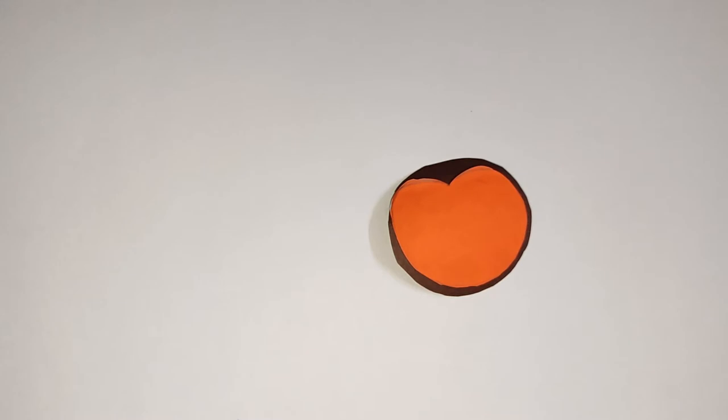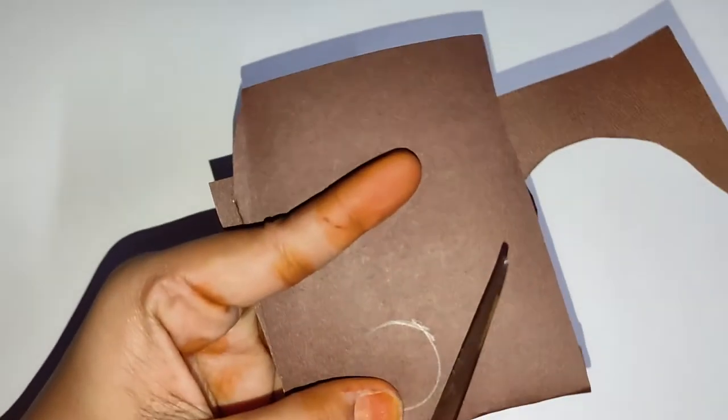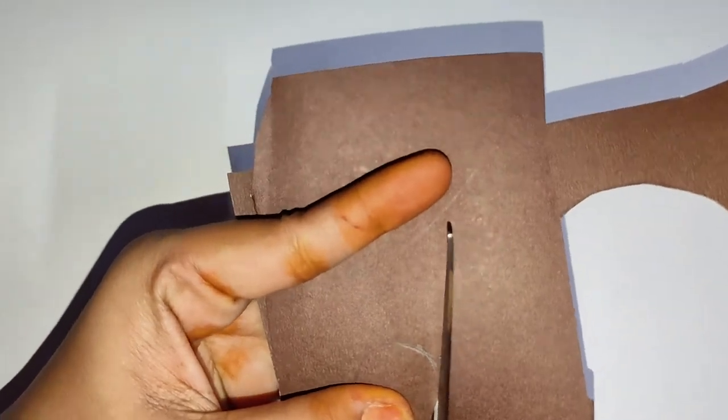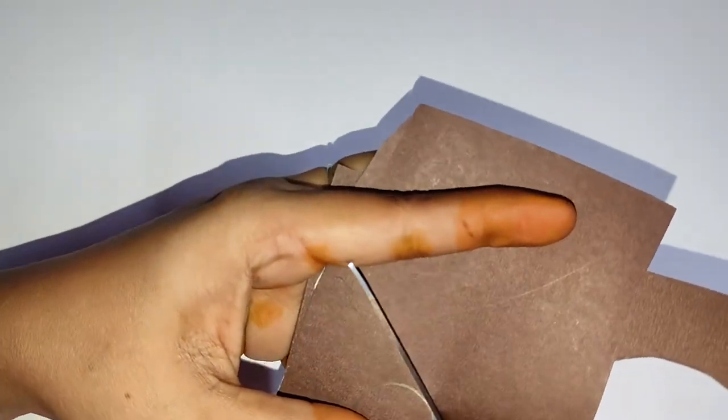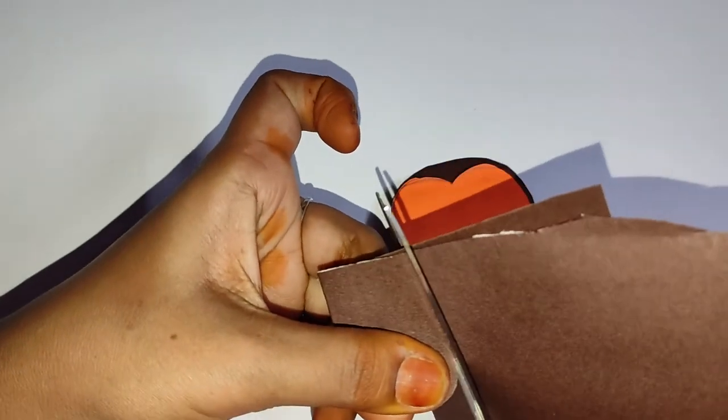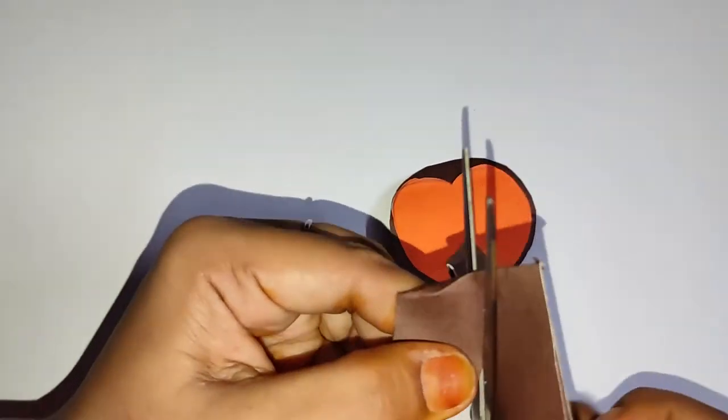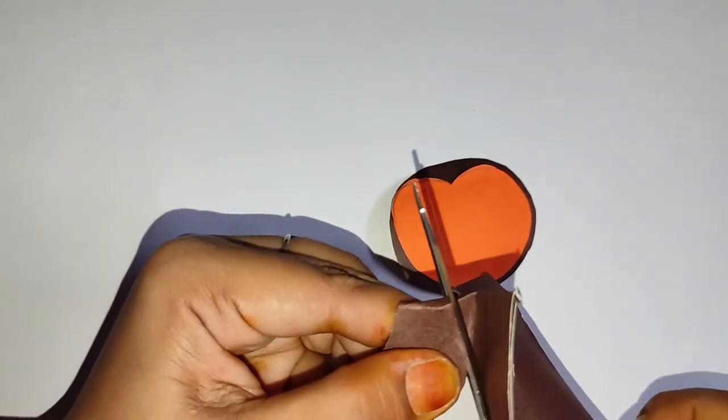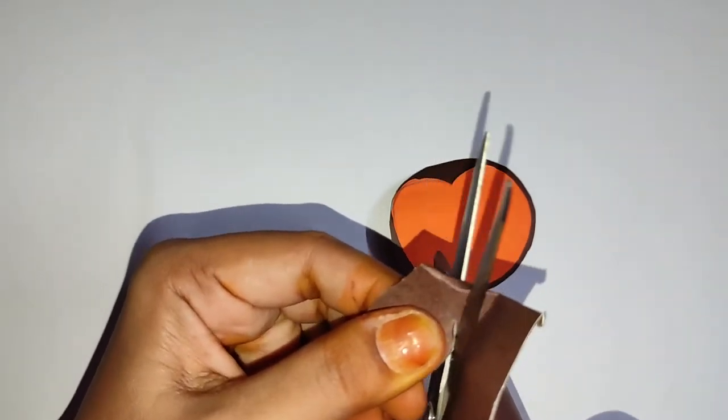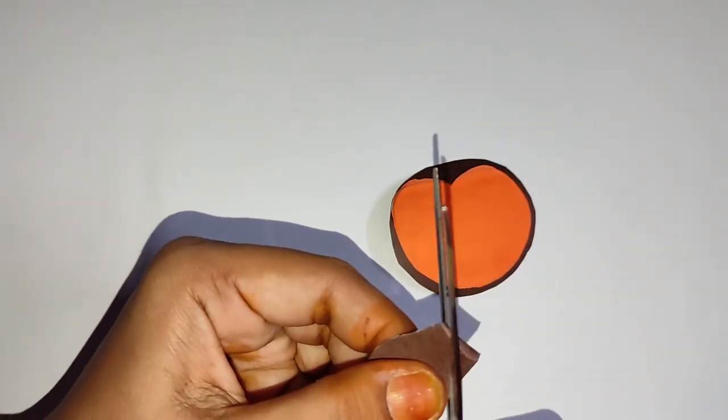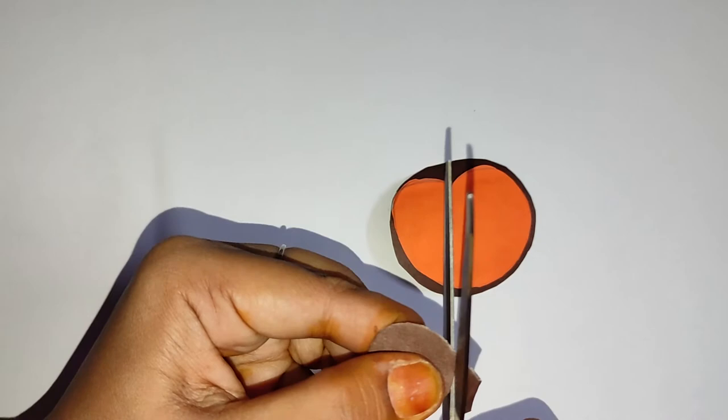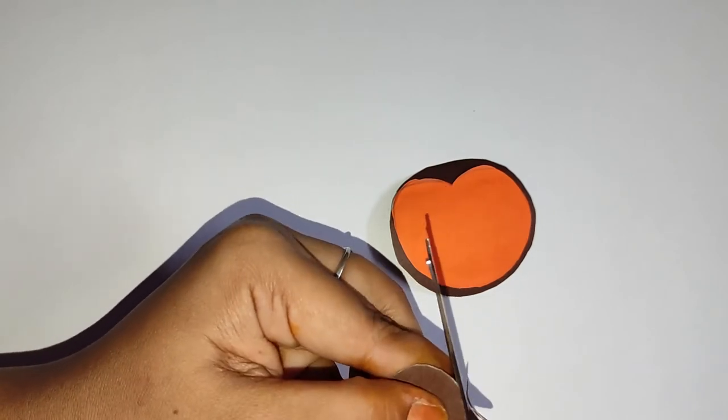Our monkey's head is ready. Now next we'll draw another one, small circles. We need two round cutouts for this to make the ears of our monkey.